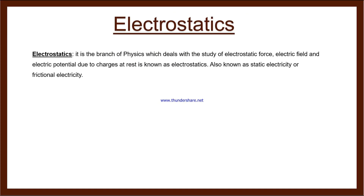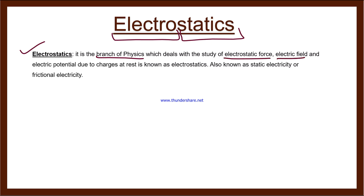The first definition: Electrostatics. As soon as you hear the word, it is clear — 'electro' means we are talking about electrons, and 'statics' means those which are at rest. So the definition: it is a branch of physics which deals with the study of electrostatic force, electric field, and electric potential.